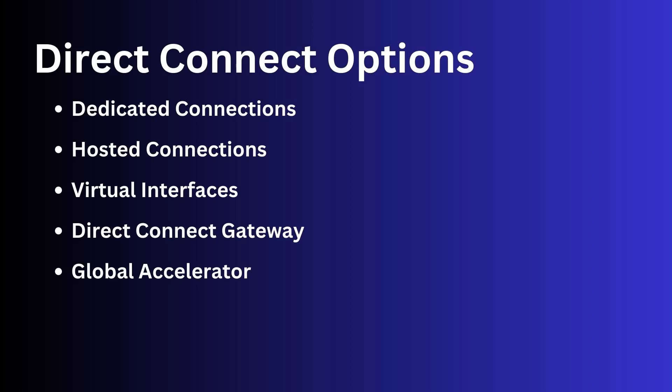Virtual interfaces: a virtual interface is a logical connection between your on-premises data center and the AWS cloud that is established through a Direct Connect connection. With virtual interfaces, you can create private connections to AWS services such as Amazon VPC, AWS Transit Gateway, and Amazon S3.